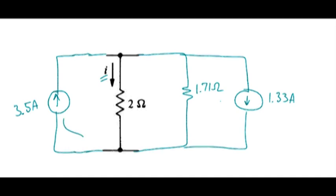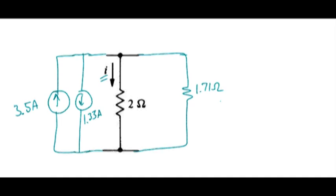Now we want to combine our two current sources together. Parallel current sources add. You just need to, when you add them, make sure that you're doing it properly. Just to show that, let me take this source on the right and I'm going to translate that over to the left side. So this is 3.5 amps.